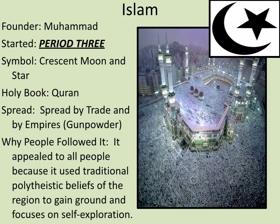Islam is not period 2 — it is period 3. However, we're going to talk about it because it is one of the major religions. The founder of Islam is Muhammad. He believes that the god Allah spoke to him, and he is going to lead the world in pursuing Allah's goal. It started in period 3. The symbol is a crescent moon and a star. The holy book is the Quran, and it is spread by trade and by empire force. They won't allow forced conversion, but they will take over a territory and eventually require it to be all Muslim. People follow it because it appeals to a traditional polytheistic belief system and because of its self-exploration that entices people to have their own connection with God.